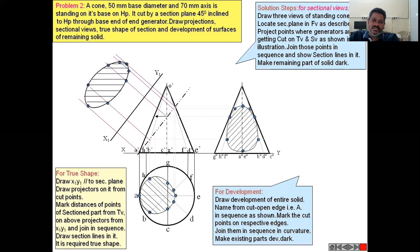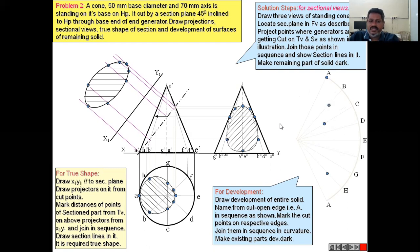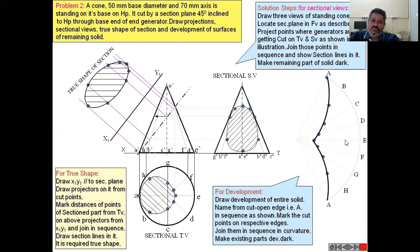To develop the surface, draw a sector by calculating the angle θ = (r / l) × 360. From the apex point, indicate all the generator points on the sector. Get the distances from the front view and locate all those points on the development, then join all those points to get the development of the cone under these conditions.